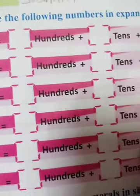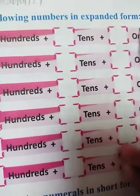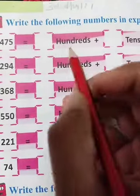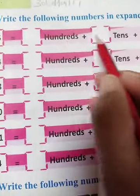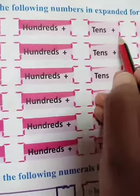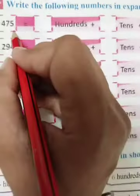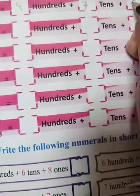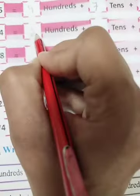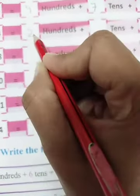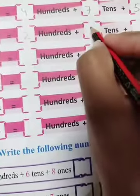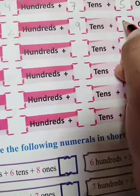Write the following numbers in expanded form. For four hundred seventy-five — you will write the hundreds value, the tens value, and the ones value. So: 4 hundreds, 7 tens, and 5 ones. For two hundred ninety-four: 2 hundreds, 9 tens, and 4 ones.